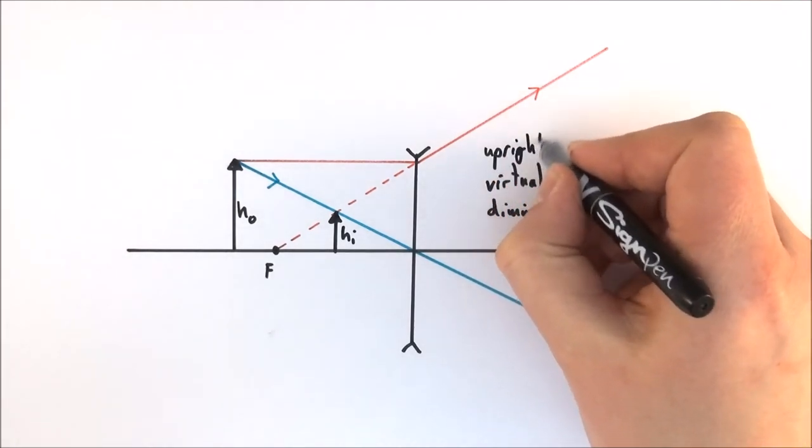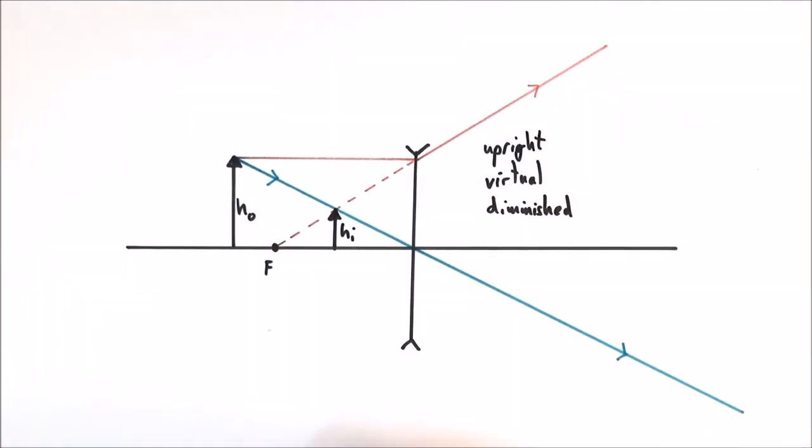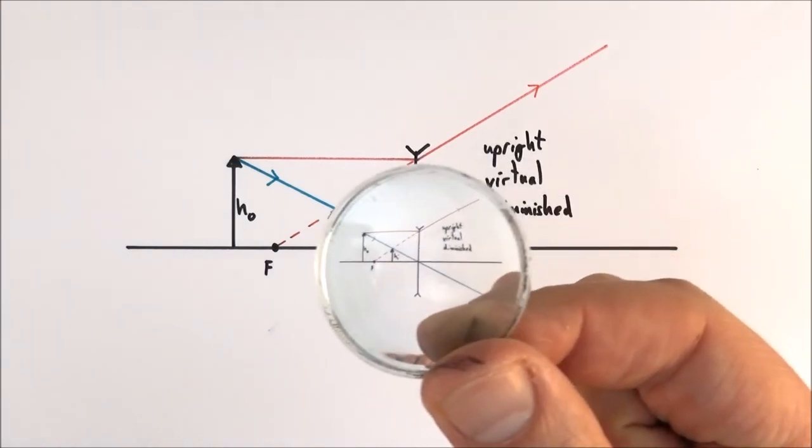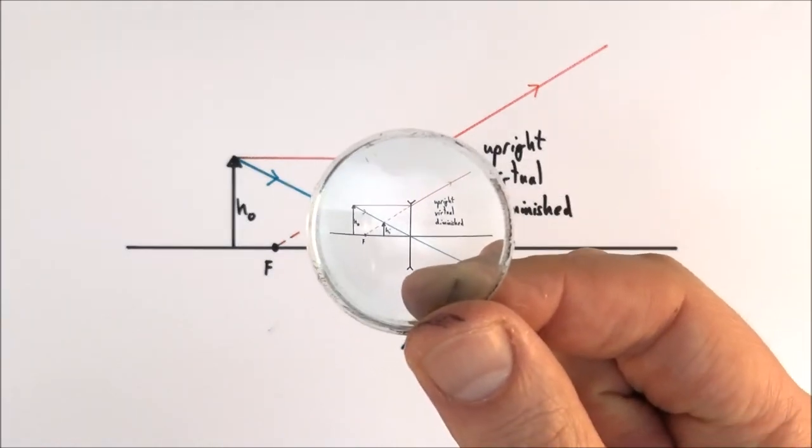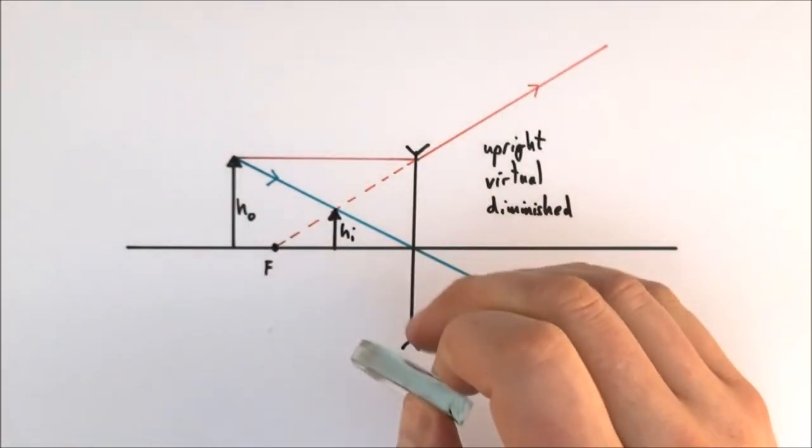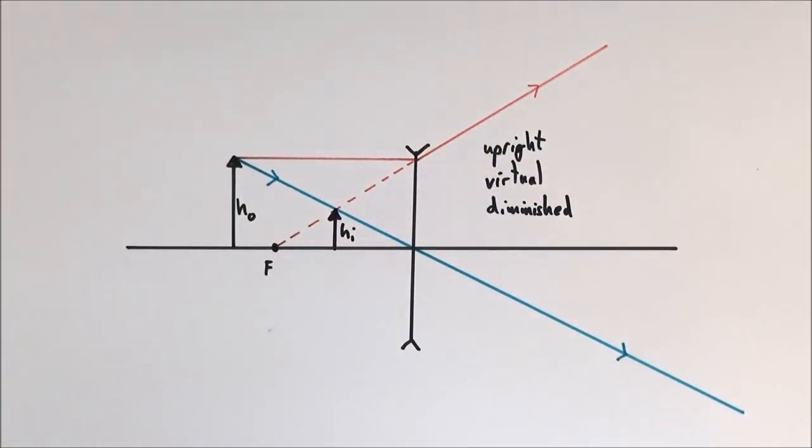So that's what happens when you look at something through one of these lenses. What we see is an image which is smaller, it's upright, and it's virtual, which means you can't really touch it. That's what happens with light through a diverging lens.